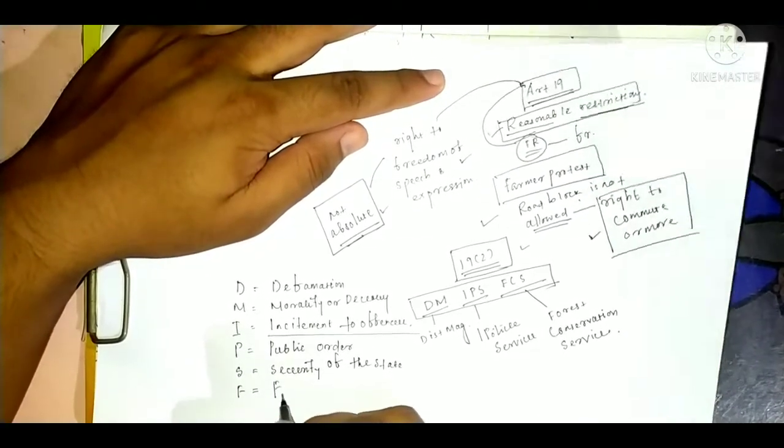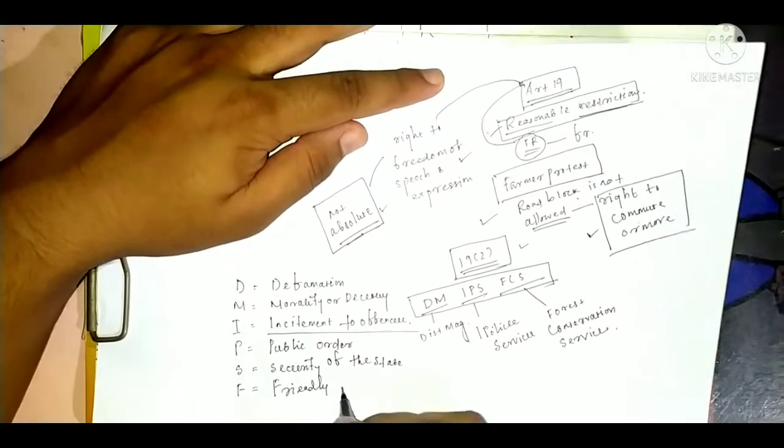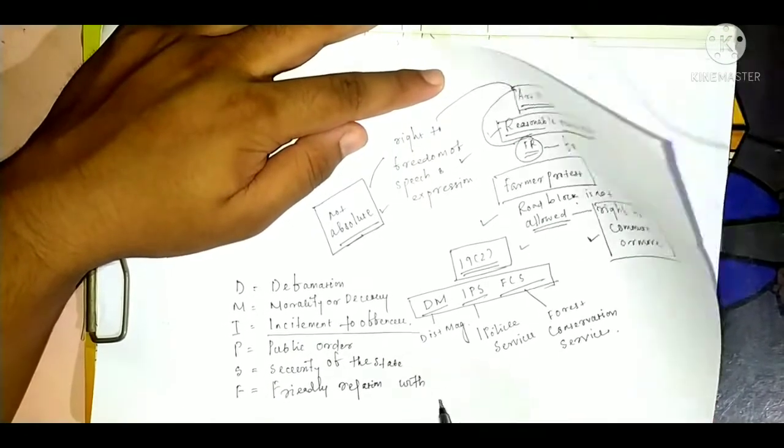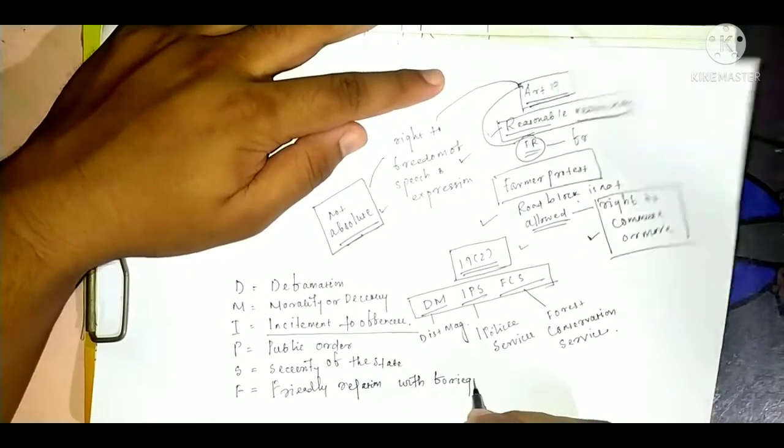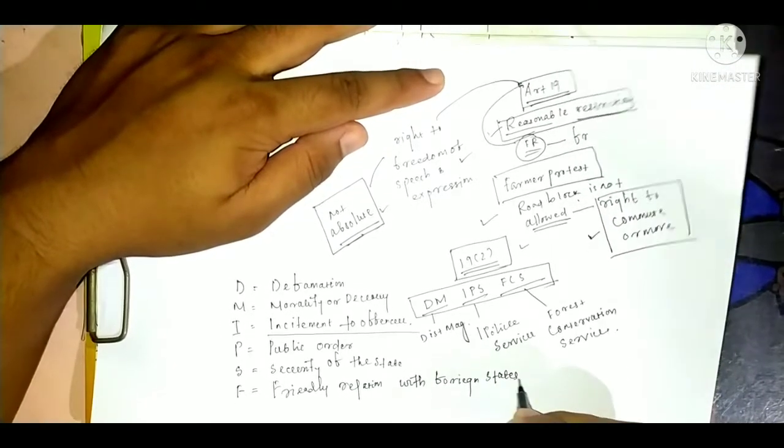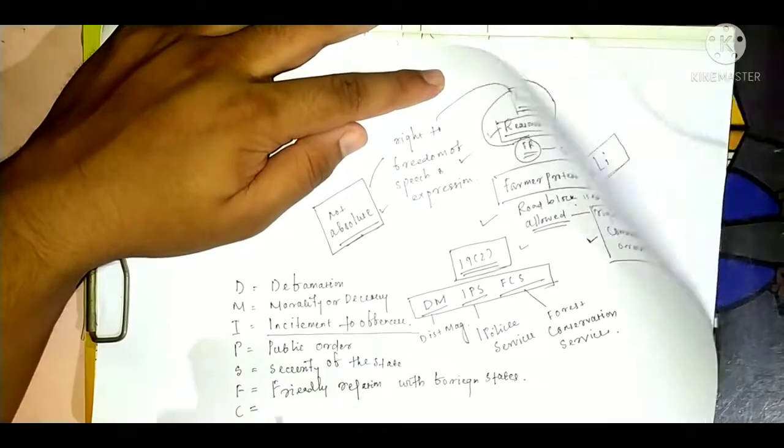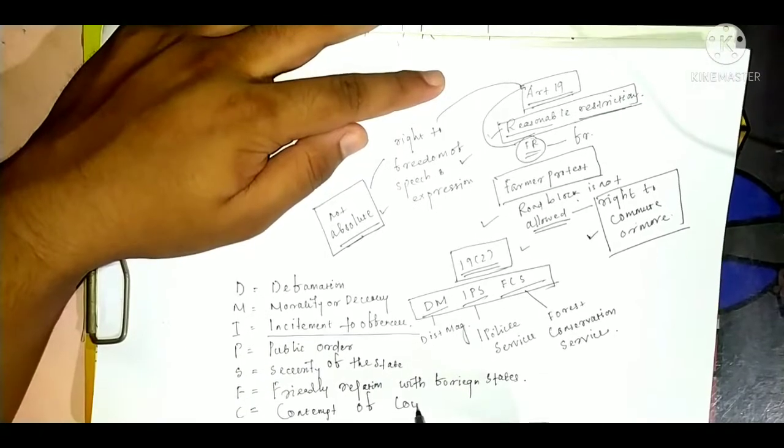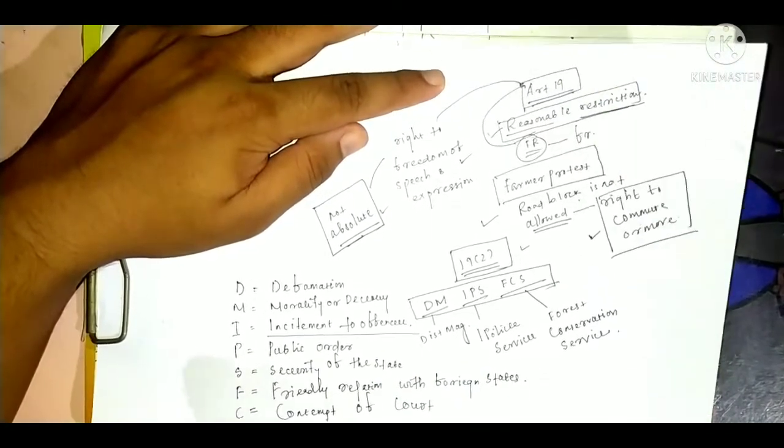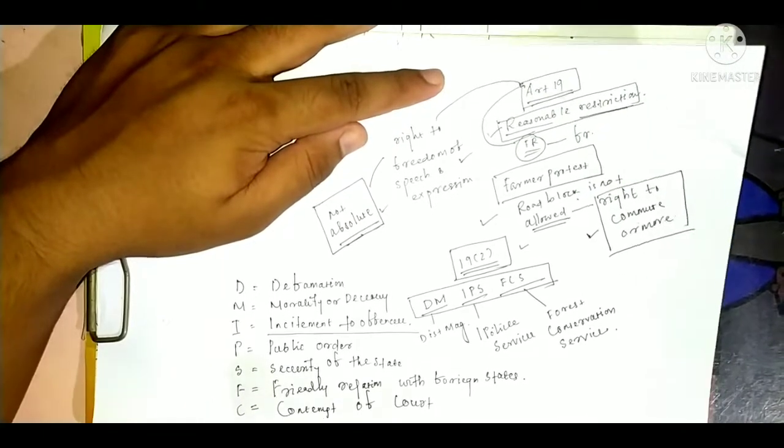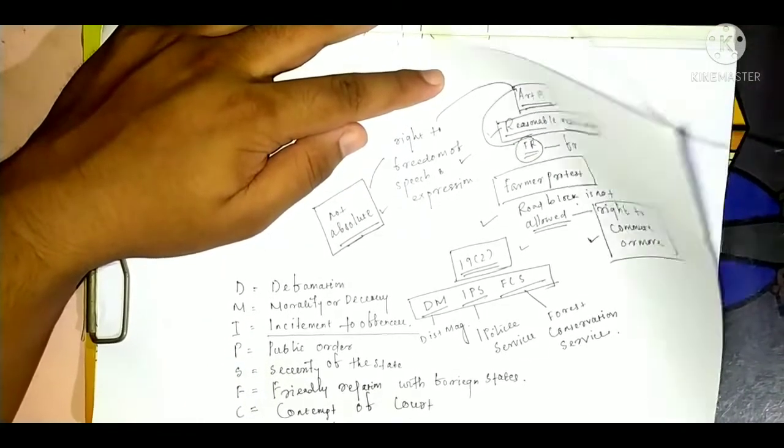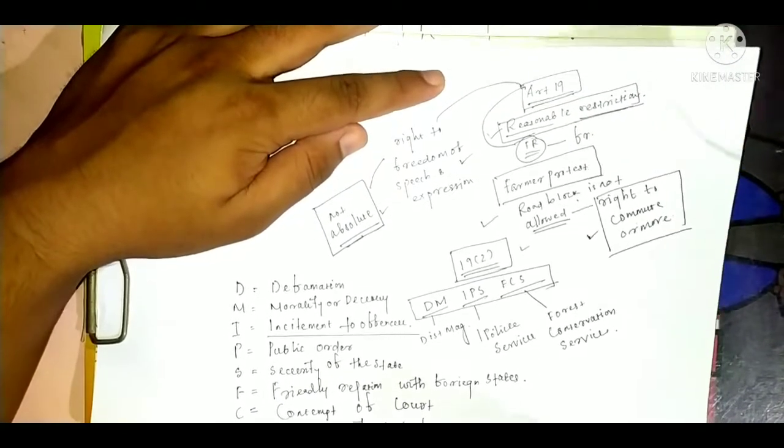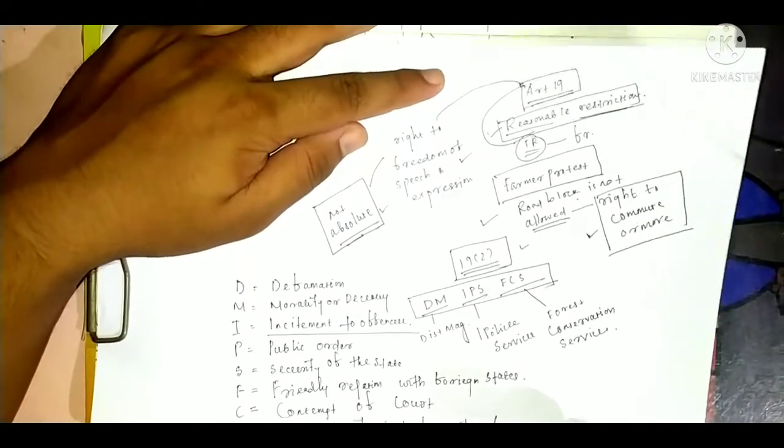Then, F is friendly relation with foreign states. Then, C is contempt of court. Then, another S is sovereignty and integrity of India.